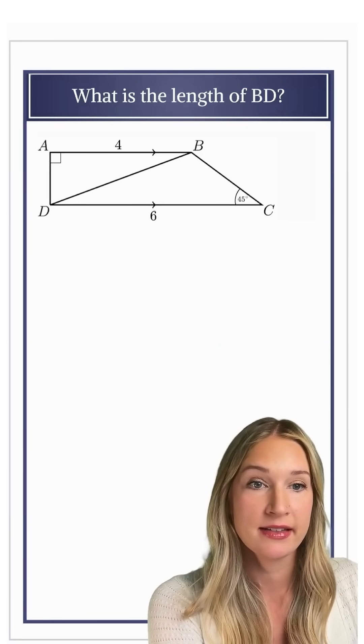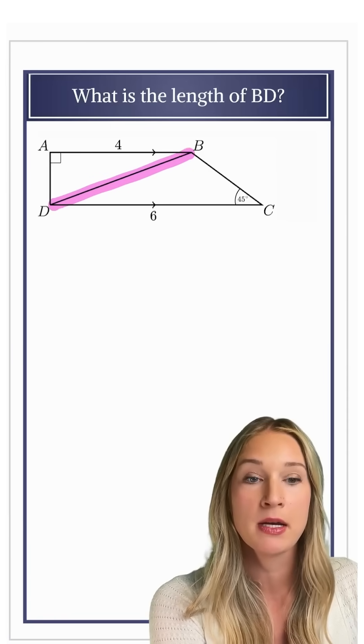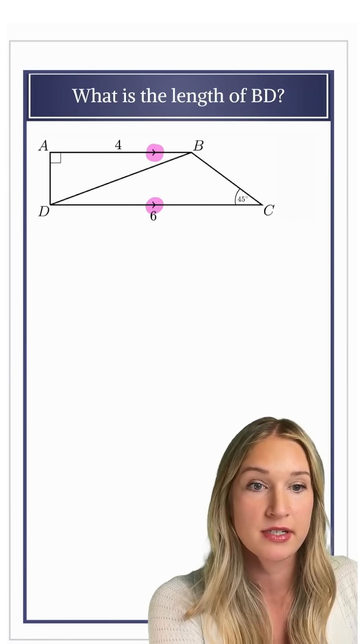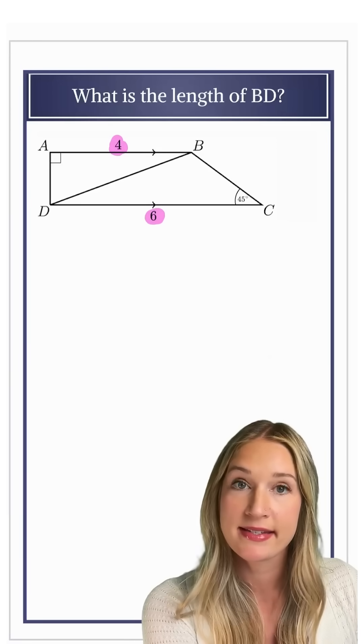We are trying to find the length of BD in this diagram. I am told that AB is parallel to DC, and we're also told each of those lengths are 4 and 6.